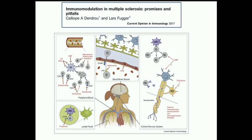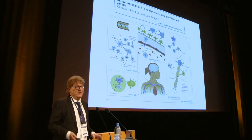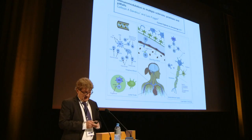Conceptualizing targets for immune intervention, the peripheral immune system can be addressed by classical agents or monoclonal antibodies that deplete or reconfigure the immune system, agents that retain autoreactive T cells in the periphery, agents that disrupt migration to the CNS, and agents that also operate within the CNS — particularly relevant to progressive stages.